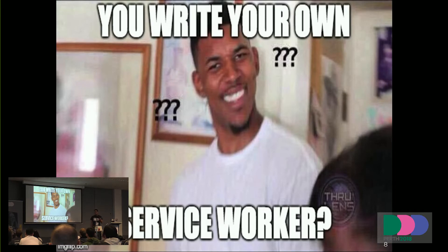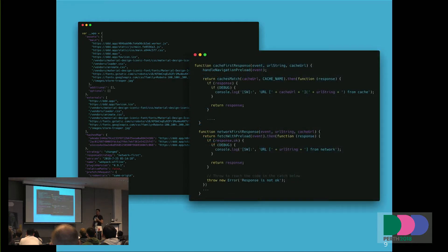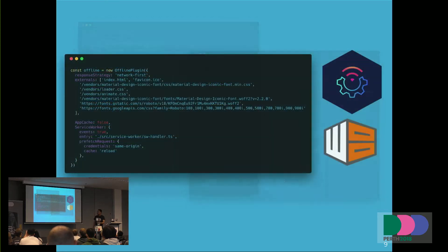When people talk about progressive web apps, they talk about service workers, which is pretty much a proxy on your browser. One of the things we learned is: please do not write the service worker yourself. This is typically what you write when doing so — you have to define all the assets you want to cache, write the code for your caching strategy — network first or cache first. It takes a lot of effort, and if you use webpack or SystemJS, all your files change every time you do a build, so you have to redo it all over again every deployment.